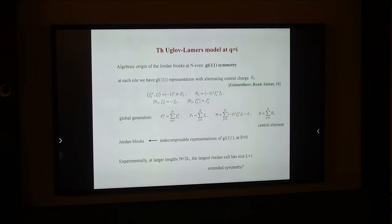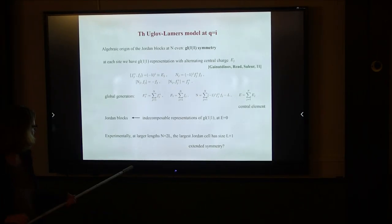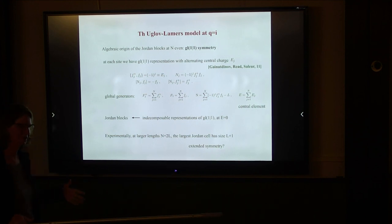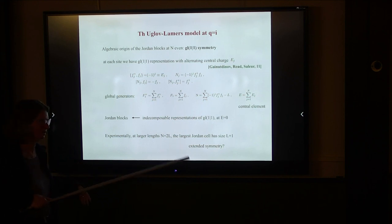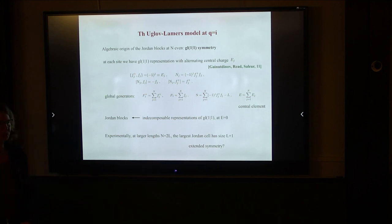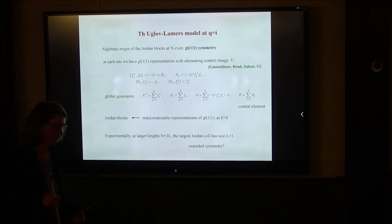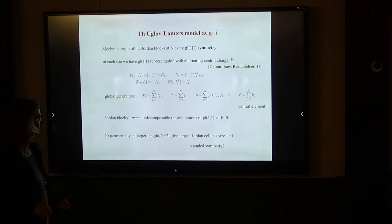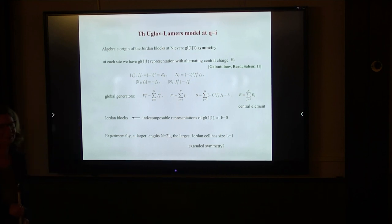Audience discussion: An audience member asked about decomposability parameters of those Jordan cells — the universal pre-factors B or beta appearing in correlation functions, where power laws are multiplied by logarithms. Another question was whether this model is related to the eclectic spin chain; the speaker thought probably not, noting the Jordan cells are larger, though both have nilpotent generators. These connections need to be explored, including relationships with non-unitary models.